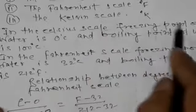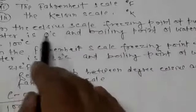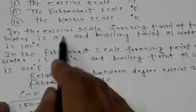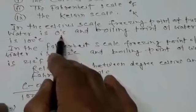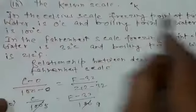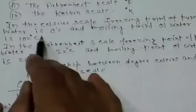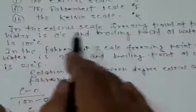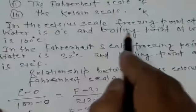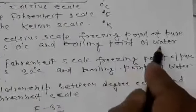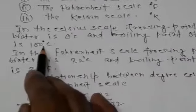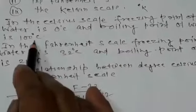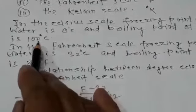In the Celsius scale, the freezing point of pure water is equal to zero degrees. The boiling point is 100 degrees, giving an interval of 100 divisions.